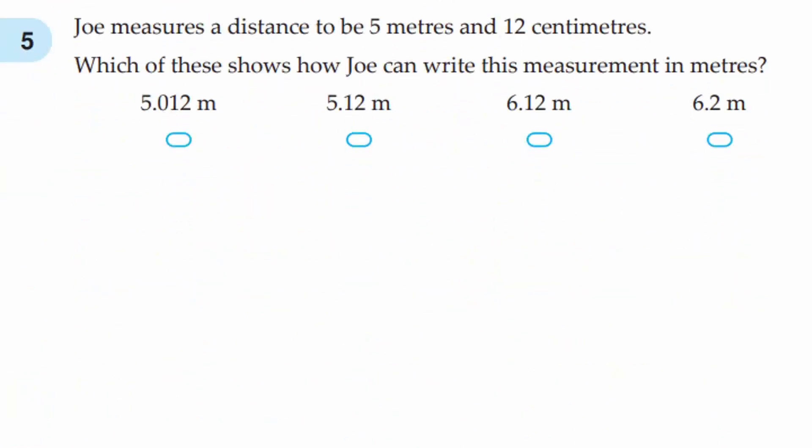Question 5. Joe measures the distance to be 5 metres and 12 centimetres. Which of these shows how Joe can write this measurement in metres? We know that in a metre, there are 100 centimetres. If there's 12 centimetres, that would be 12 over 100 as a metre. And 12 over 100 is 0.12, and because we have 5 metres, it would be 5.12. The answer is B, 5.12.